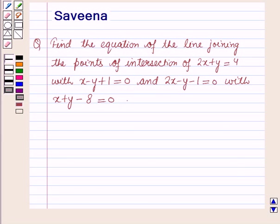Hello and welcome to the session. In this session, we will discuss a question which says: find the equation of the line joining the points of intersection of 2x + y = 4 with x - y + 1 = 0, and 2x - y - 1 = 0 with x + y - 8 = 0.